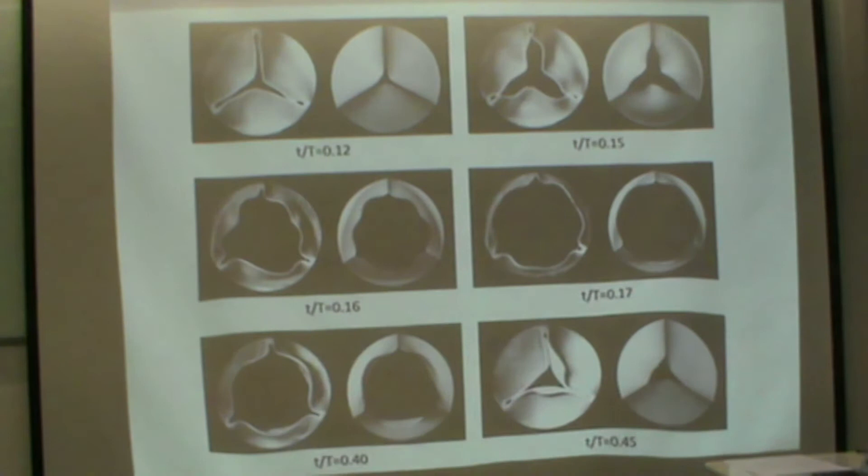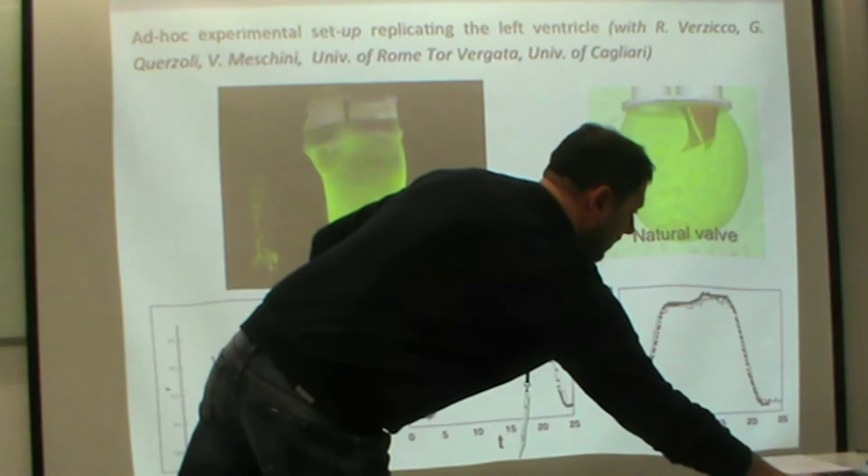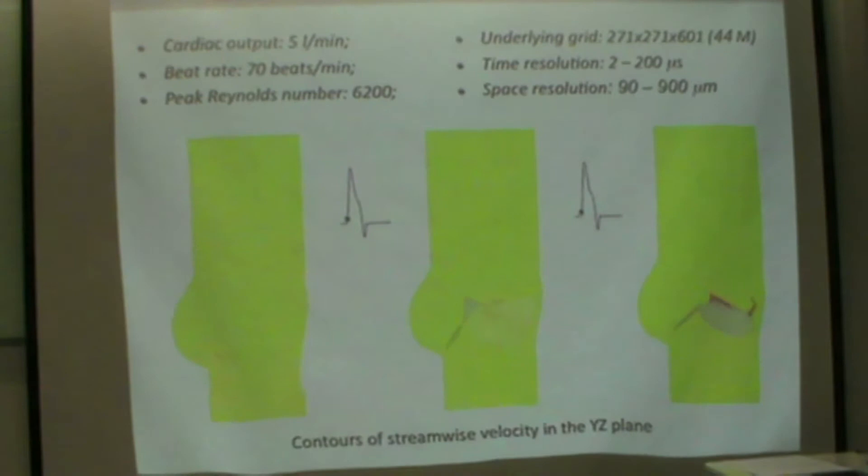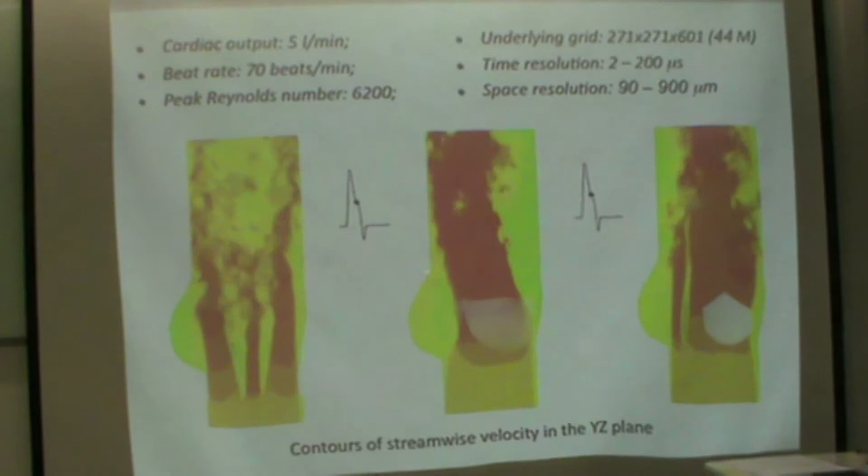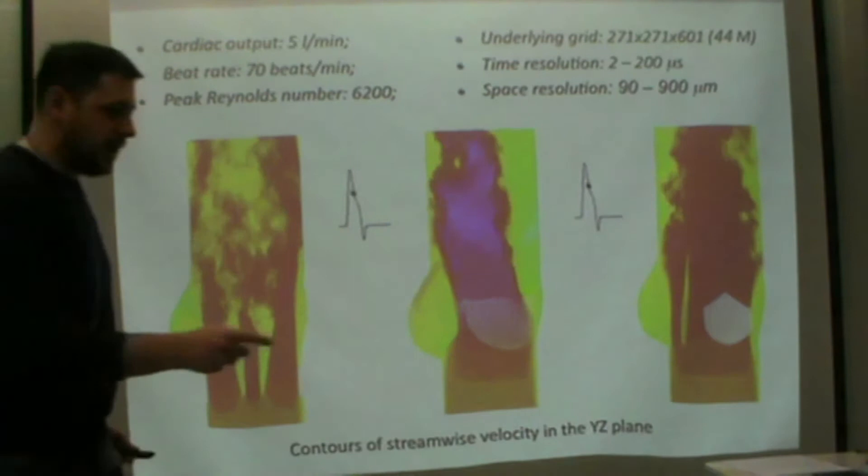We can model the left ventricle with experiments in Rome where we compared the position of points on this silicon rubber ventricle with very good agreement. We use the solver to study different valve models. This is the flow field through three different kinds of valves: the bileaflet mechanical, the bioprosthetic valve, and the trileaflet mechanical valve. Different flow fields, different level of stresses, and different results.